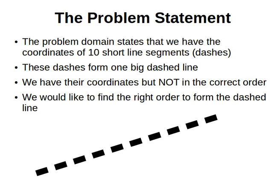So our problem says that we have the coordinates of 10 short line segments or 10 dashes, and these 10 dashes form one big dashed line, as you can see in front of you. The idea is that we have their coordinates but we don't have the correct order in order for them to form the dashed line.